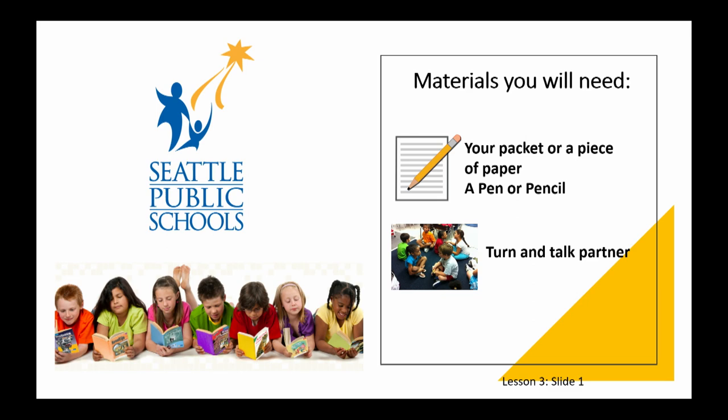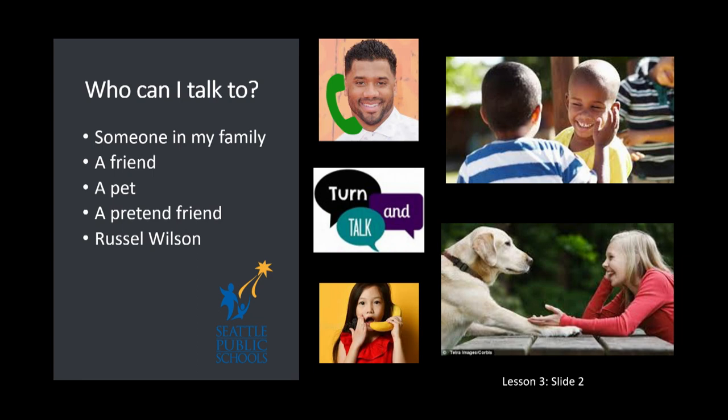Before we get started, let's make sure you have the materials that you need. You will need your packet if you have one, or just paper if you don't. You'll need a pencil or a pen. And of course, you'll need your turn and talk partner. Anyone can be your turn and talk partner — a brother, a sister, a cat, or someone you've called who's on the line and ready to talk about your reading.